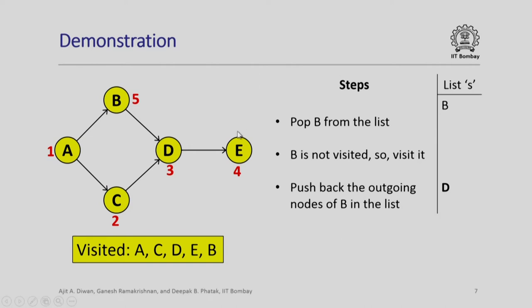Let us look at this element B. We pop B from the list. Since B is not visited, we visit it. Now we have to push back all the outgoing edges from B. The outgoing nodes from B is only one that is D. So we push D on the list. So list still contains D.